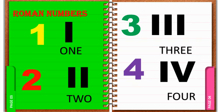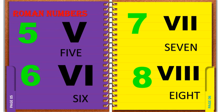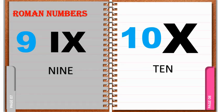1 represents I, 2 represents II, 3 represents III, 4 represents IV, 5 represents V, 6 represents VI, 7 represents VII, 8 represents VIII, 9 represents IX.